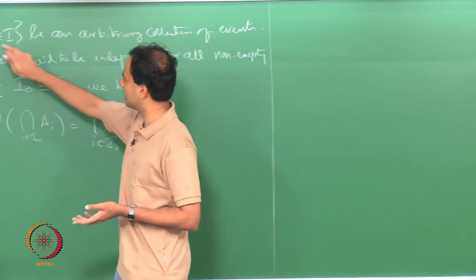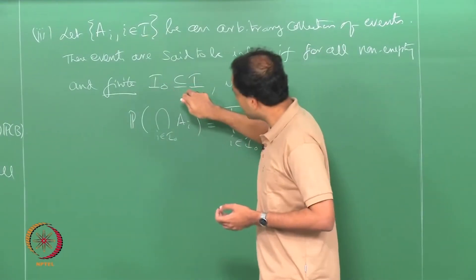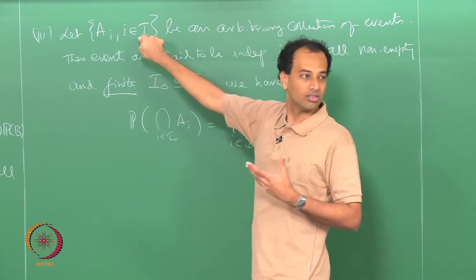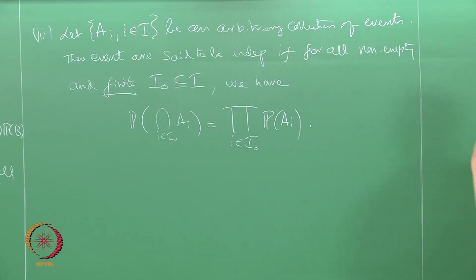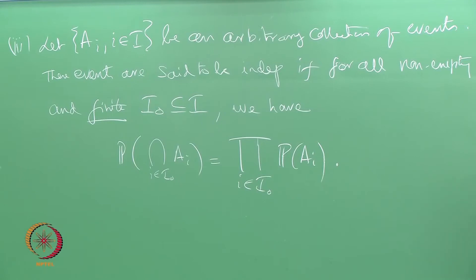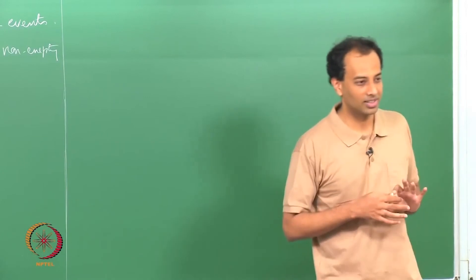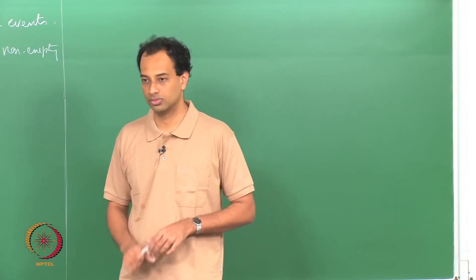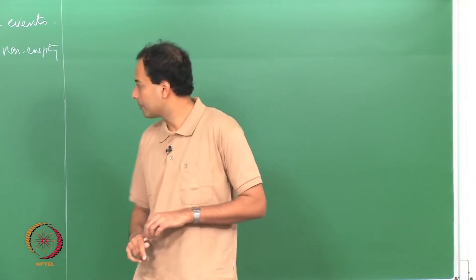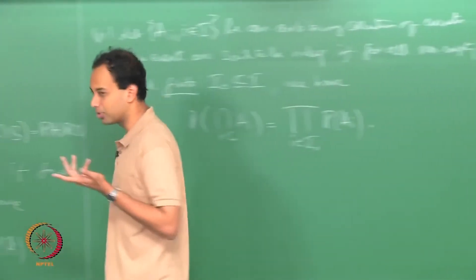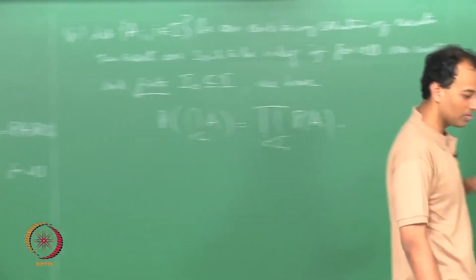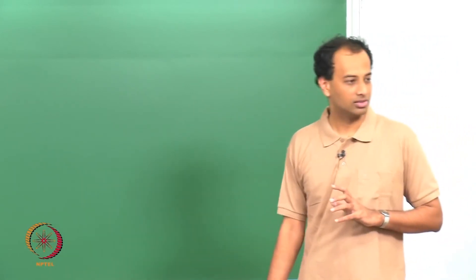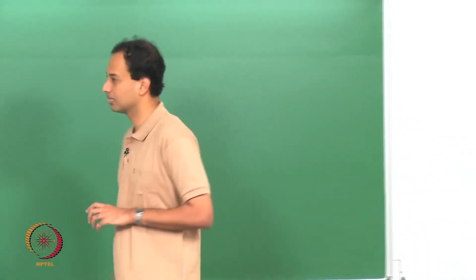For every finite sub-collection, you verify this relation. The number of conditions you have to verify is also possibly infinite, so you may not be able to do it one by one. You may have to prove a general statement saying for every sub-collection i-naught, this relation holds — and then your Ai's are independent.